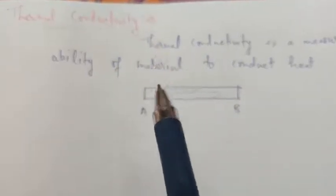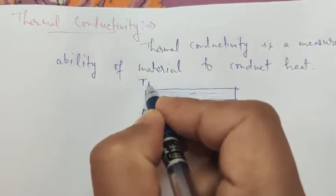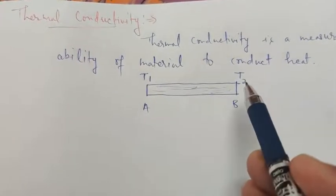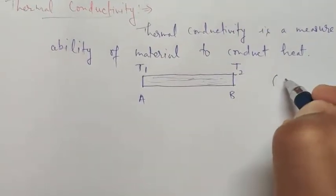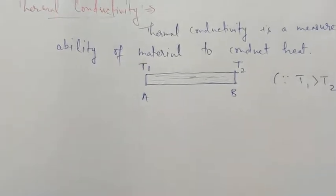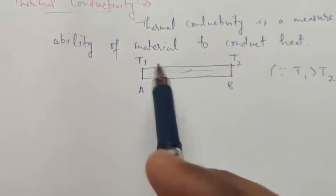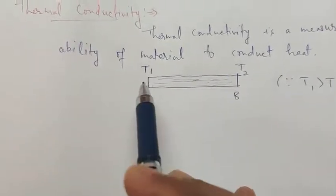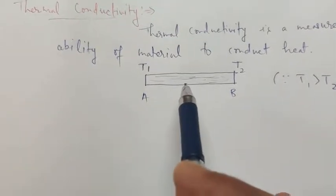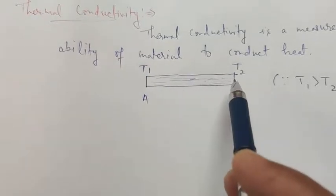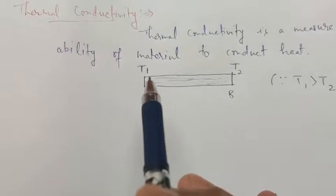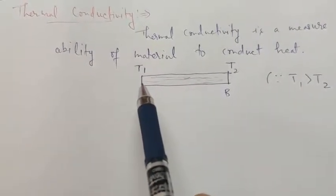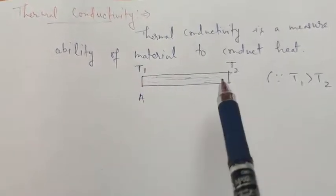To understand thermal conductivity, let us consider a temperature gradient: end A has temperature T1 and end B has temperature T2, where T1 is greater than T2. The ability of the material to transfer heat from the higher-temperature end to the lower-temperature end is known as thermal conductivity.